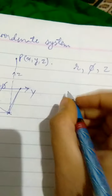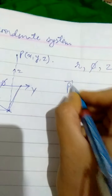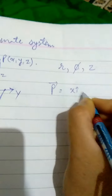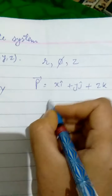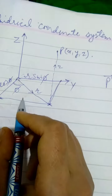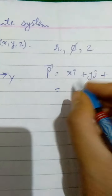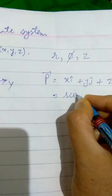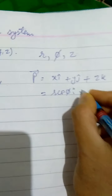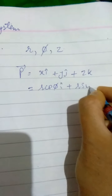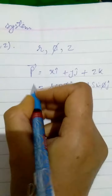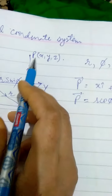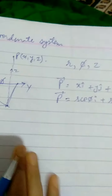Now, we know that the position vector of this point P will be written as x i plus y j plus z k. In terms of cylindrical coordinates, we know x is r cos phi, so it is r cos phi i, and y is r sin phi j, plus z k. This is the position vector of the point P whose Cartesian coordinates are x, y, and z.